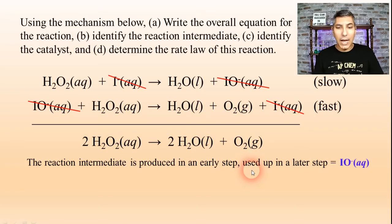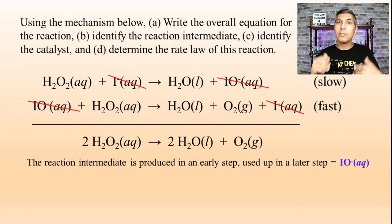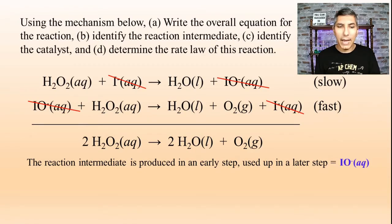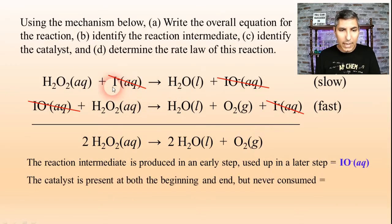Now part C says identify the catalyst. Now a catalyst is different. A catalyst is something that's present at the beginning of the reaction. It's also present at the end of the reaction. So it's not really consumed over the course of the reaction. And to me it looks like the catalyst is this I⁻, the iodide ion. It's present at both the beginning and the end, but it's never consumed.